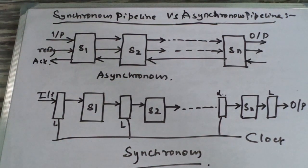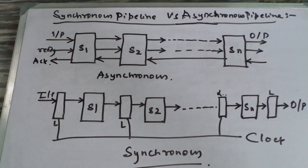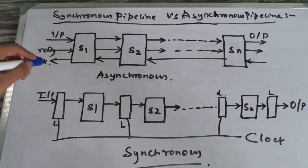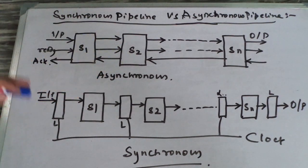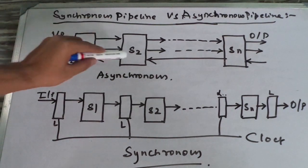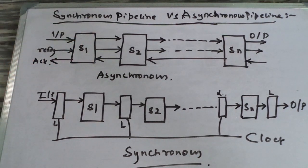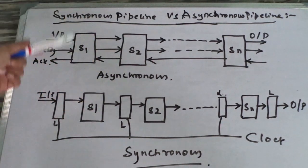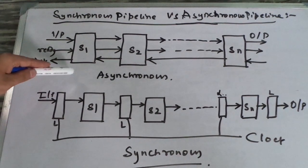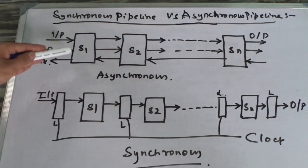When stage SI is ready to transmit data, it sends a signal to stage SI plus 1. After receiving the incoming data, SI plus 1 returns an acknowledgement signal to SI. Here SI plus 1 is S2 and SI is S1. So this is the performance done by the asynchronous part.